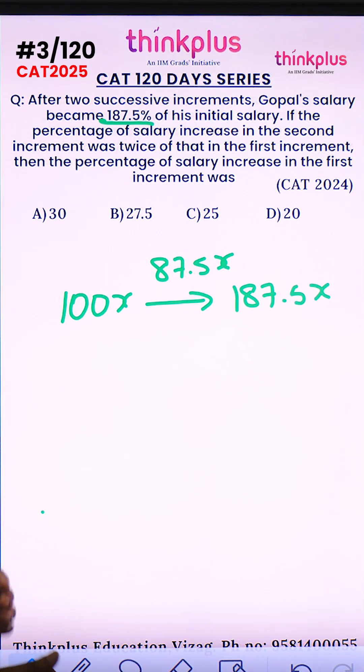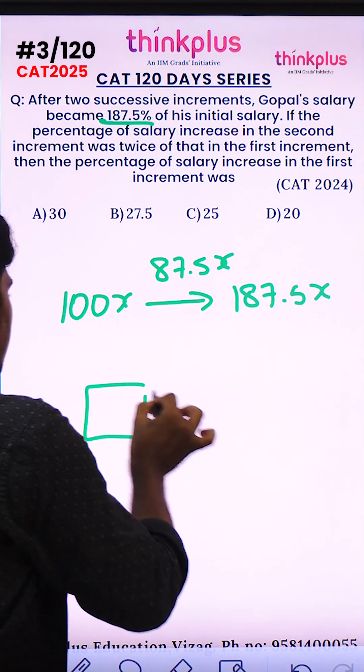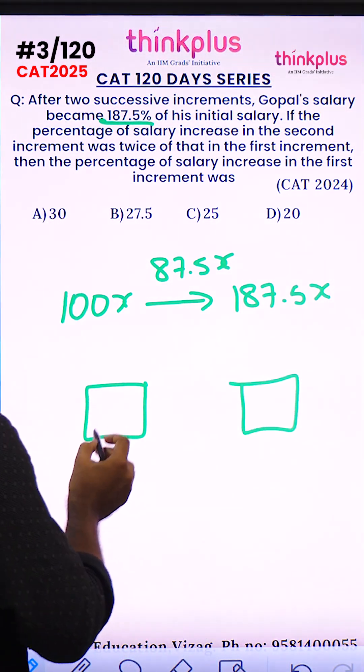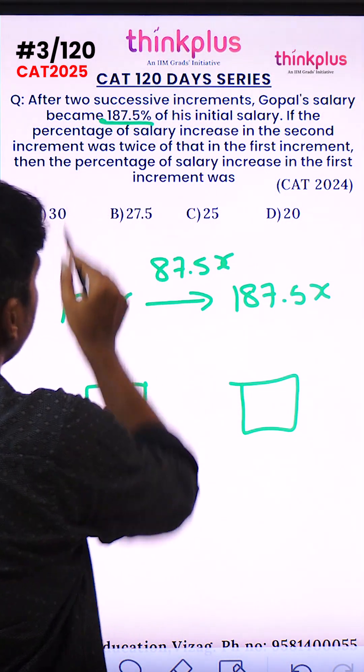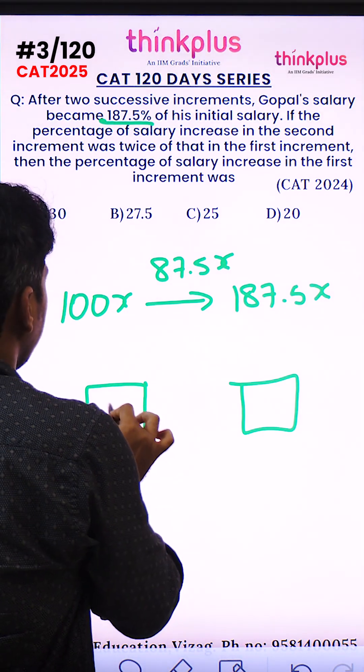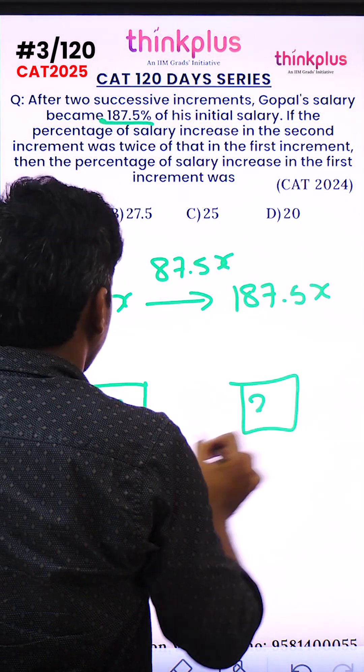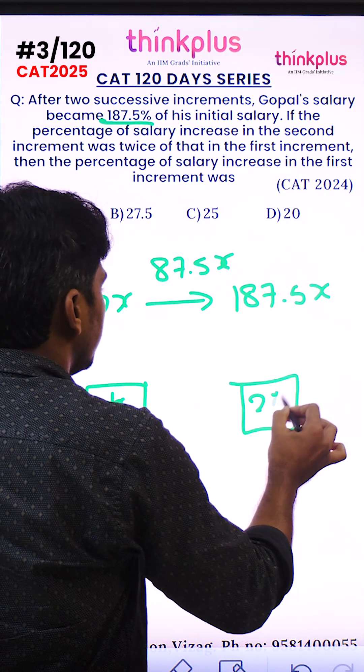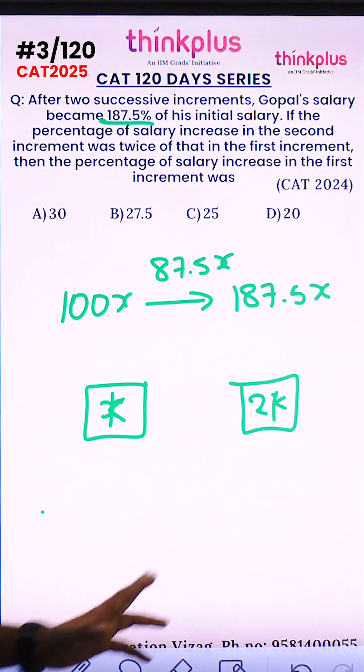If the percentage of salary increase in the second increment was twice that in the first increment, then the first increment is k and the second increment is 2k. So let's take k here and 2k here for the increments and put in the effective increment formula.